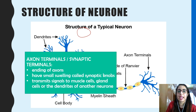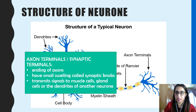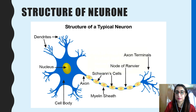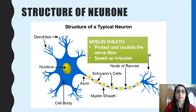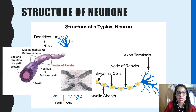The axon terminal, also called the synaptic terminal, is the ending of an axon. It has small swellings called synaptic knobs that transmit signals to muscle cells, gland cells, or the dendrites of another neuron. The myelin sheath protects and insulates the nerve fiber and speeds up impulses. The node of Ranvier facilitates rapid conduction of nerve impulses. The myelin sheath is also surrounded by Schwann cells, which help to transmit impulses.